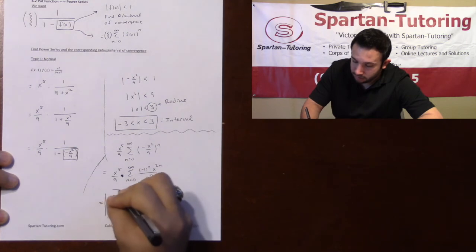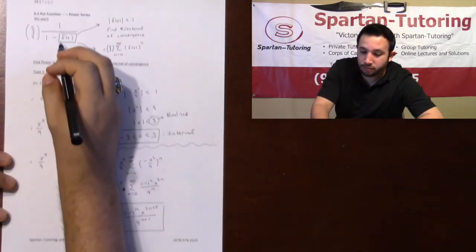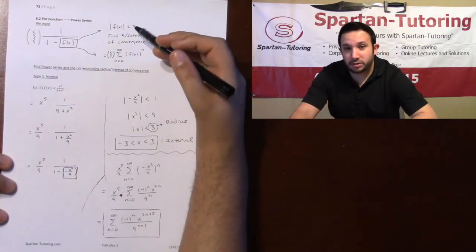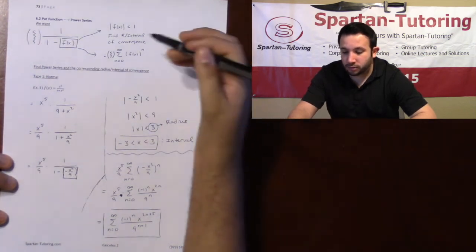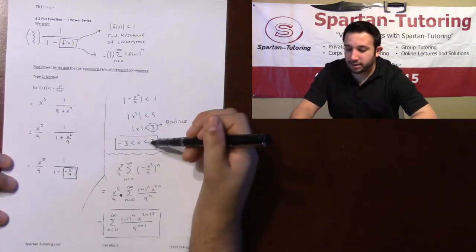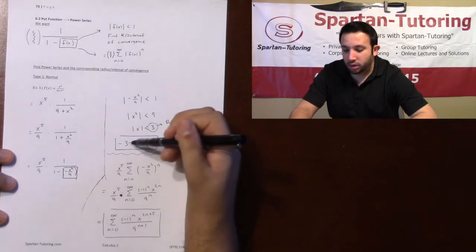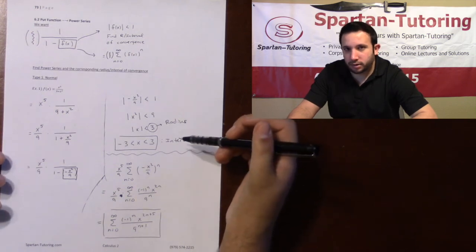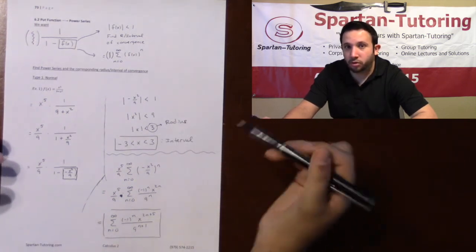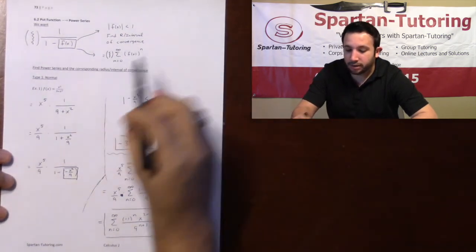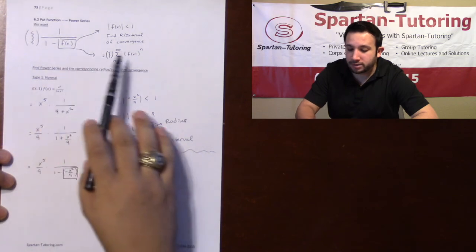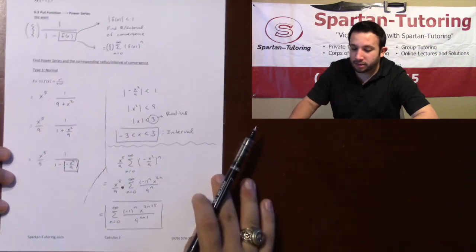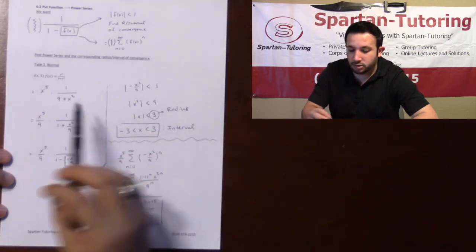To summarize the algebraic approach: put the function into the form 1 over 1 minus f(x). Once in that form, do two things — set the absolute value less than one to find the radius and interval of convergence, which will almost always be exclusive endpoints. Then take whatever you boxed, raise it to the n, put any algebra from the outside of the series back in place, and simplify to get your final answer.